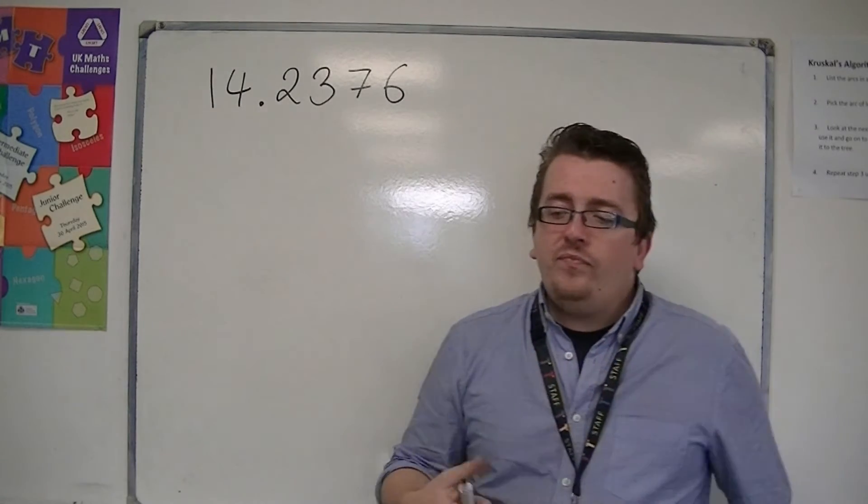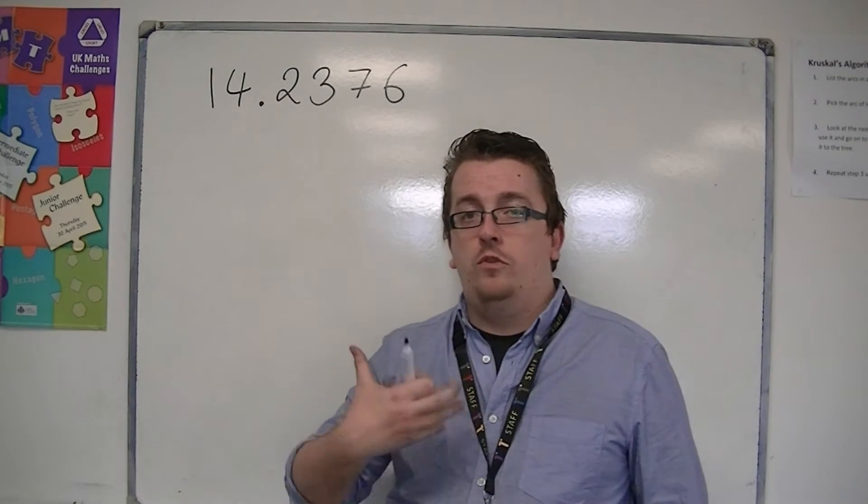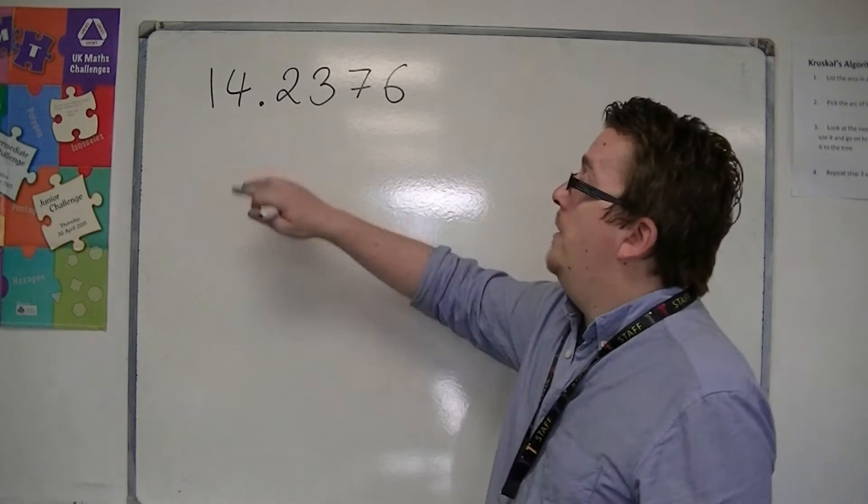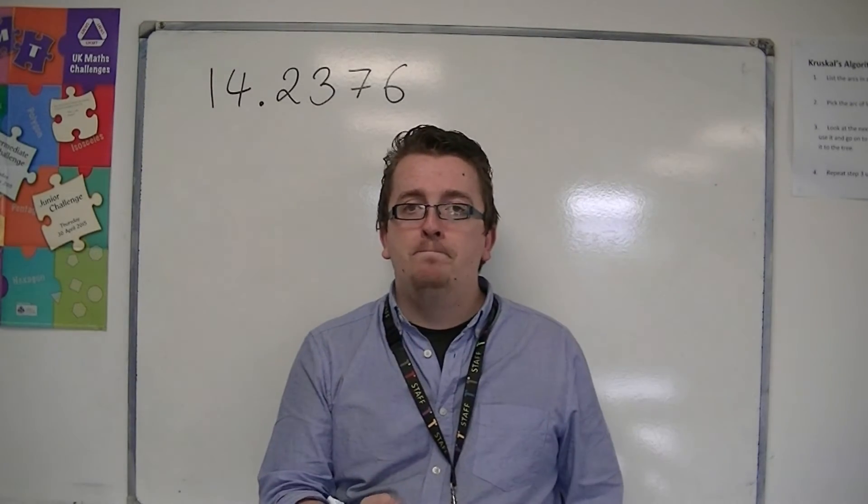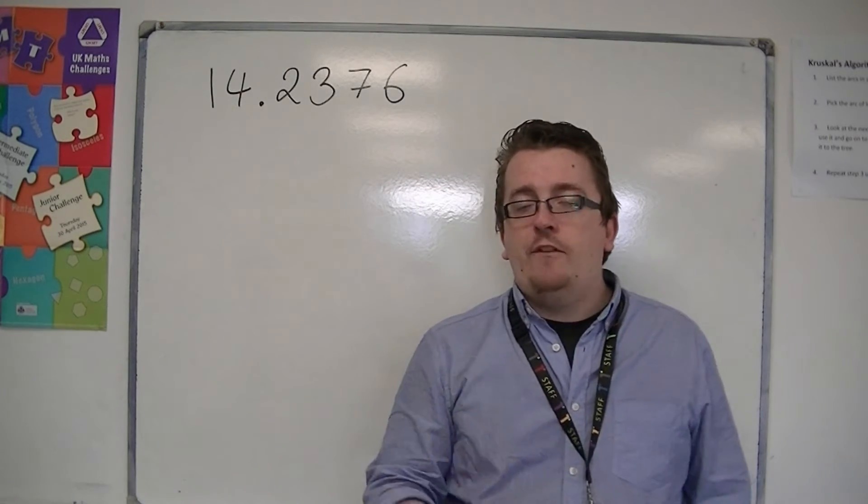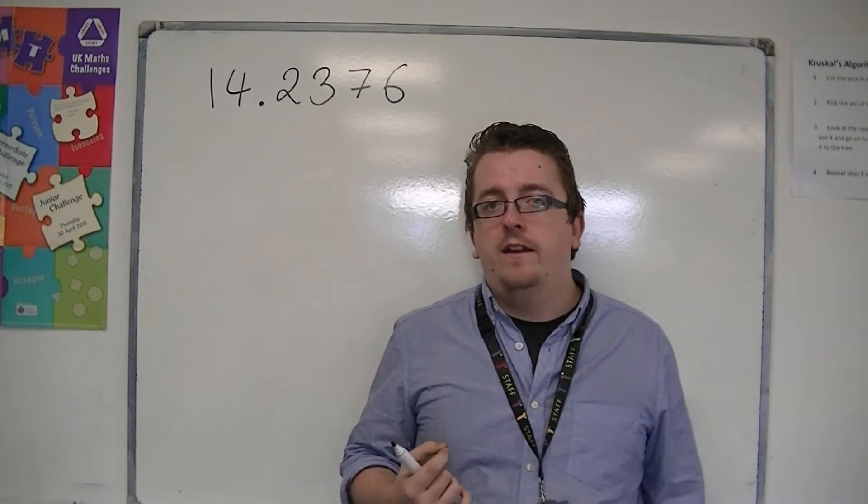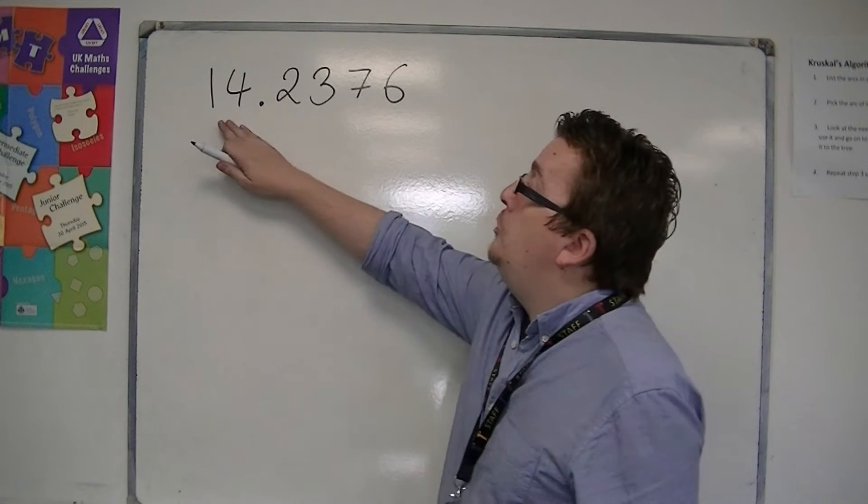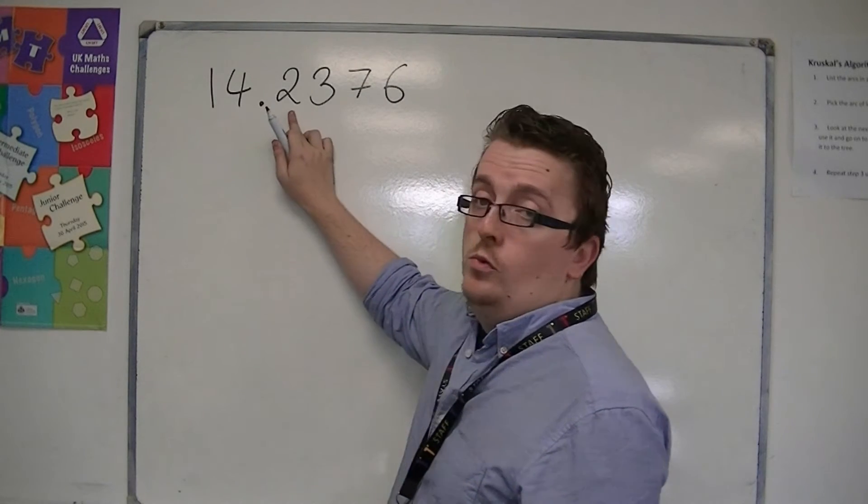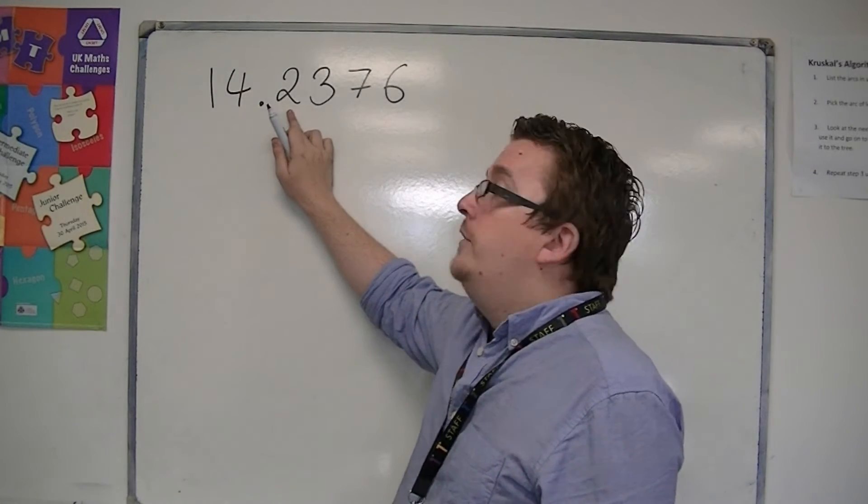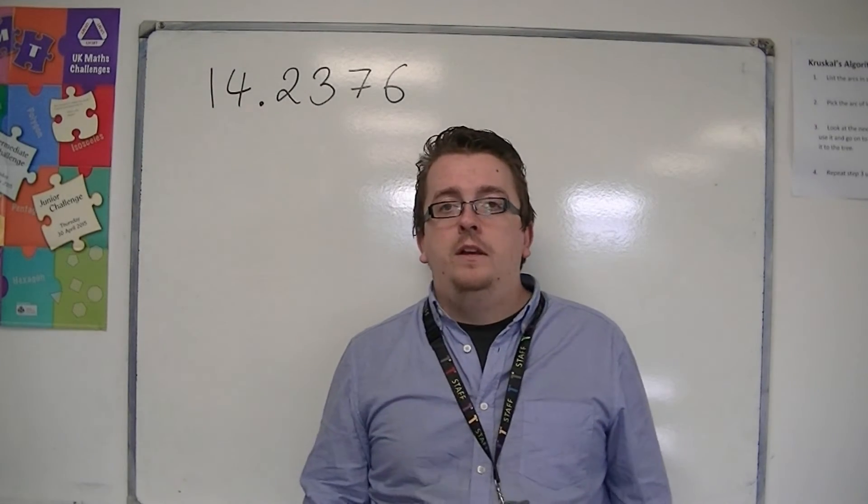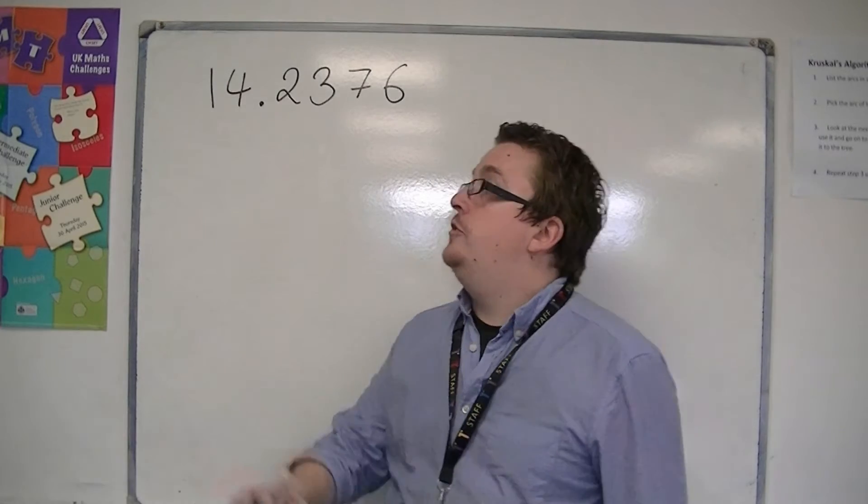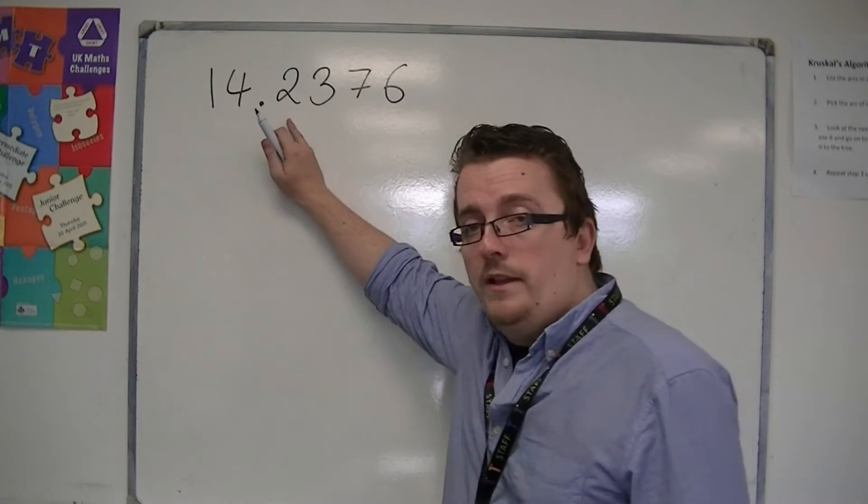Now, obviously, if I told you to, or asked you, to draw a line that was 14.2376 centimeters long, that's going to be very difficult to do by eye. And the likelihood is that you'd be able to draw 14.2 centimeters, but to get it any more accurate than that would be very difficult. So you would be able to draw it to one decimal place.